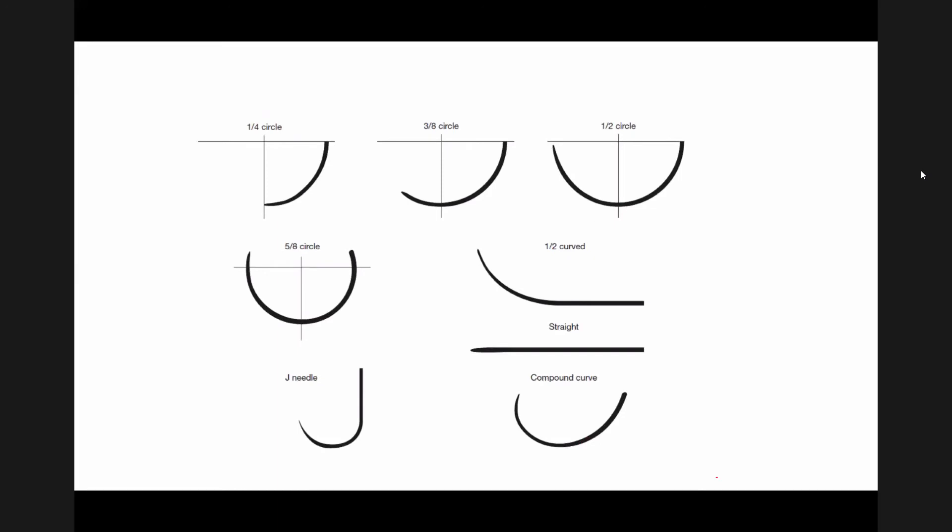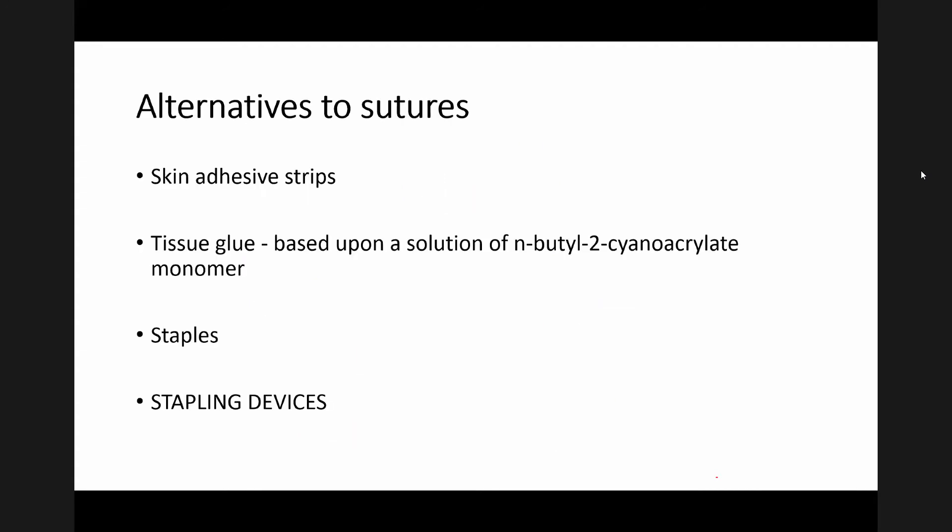Nowadays there are alternatives to suture material. They include skin adhesive tapes, tissue glue — based upon a solution of N-butyl cyanoacrylate monomer, similar to super glue — and staples and strapping devices. These are alternative materials to sutures.